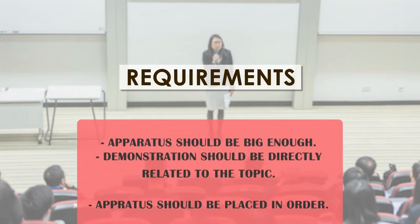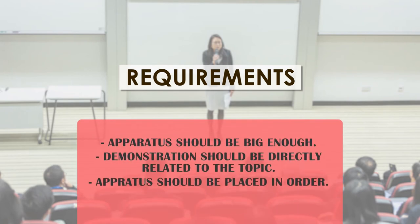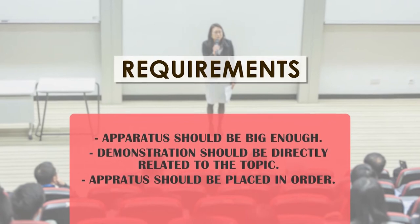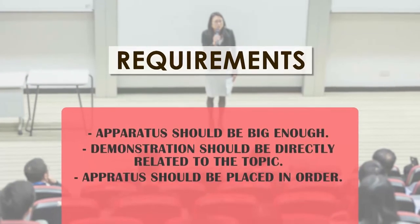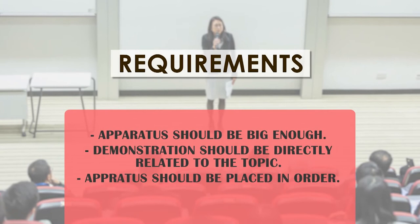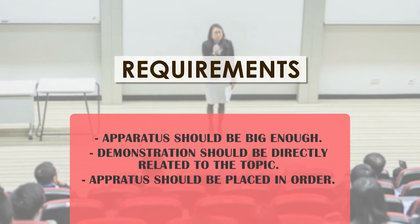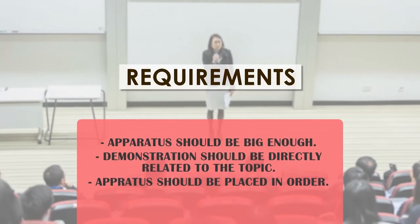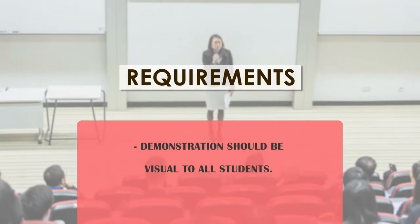The apparatus used for demonstration should be big enough to be seen by the whole class. The teacher should be clear about the objective of the demonstration, and it should be directly related to the topic being taught. All pieces of apparatus should be placed in order before starting the demonstration. The demonstration should be visible to all students, and the demonstration table should be at a slightly higher level than the student tables.